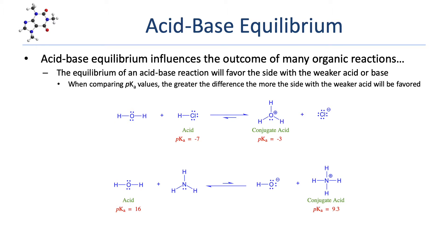We can depict that with a lopsided pair of equilibrium arrows. By comparing pKa values, you can tell how much one side of the equation is favored — the bigger the difference, the more the reaction favors the side of the weaker acid. In the second example, water reacts with ammonia, where water is the acid and ammonia is the base. Water has a pKa of 16 and ammonium has a pKa of about 9.3, so water is the weaker acid and the left side of the equation will be favored.